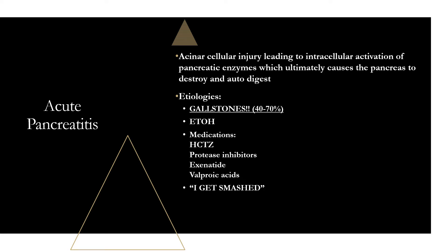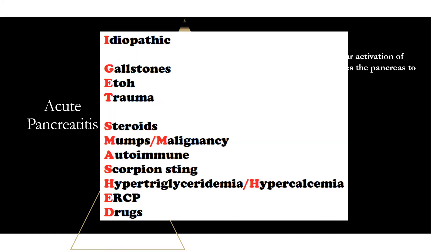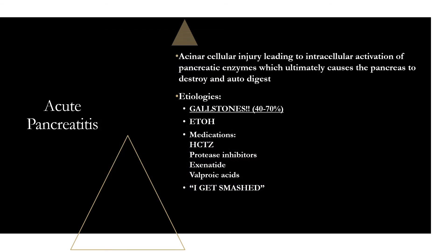There's a great mnemonic to remember all causes of acute pancreatitis: 'I Get Smashed.' I = Idiopathic, G = Gallstones, E = ETH (alcohol) — those are your two most common — T = Trauma, S = Steroids, M = Mumps/Malignancy, A = Autoimmune, S = Scorpion sting, H = Hypertriglyceridemia (triglycerides usually need to be above 1,000), E = ERCP (iatrogenic), D = Drugs.